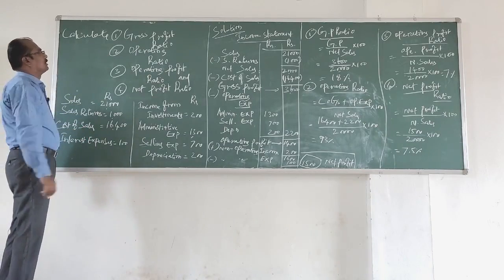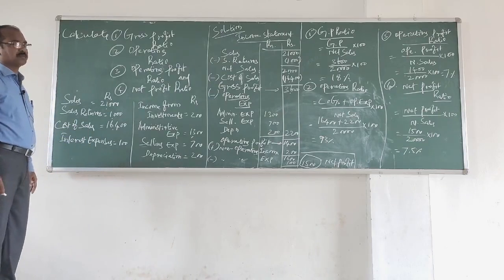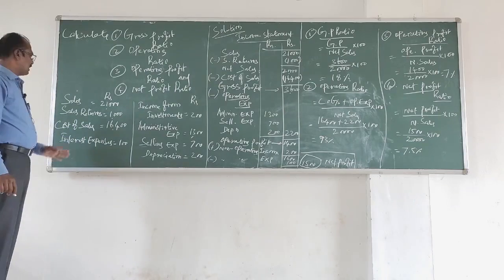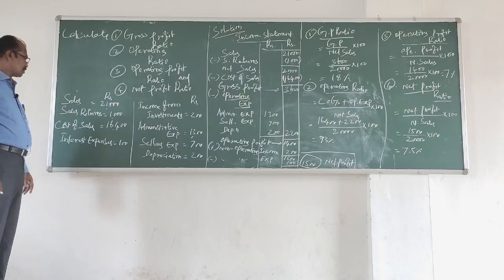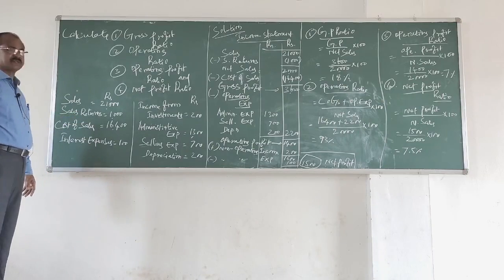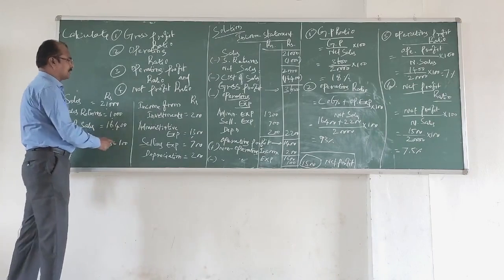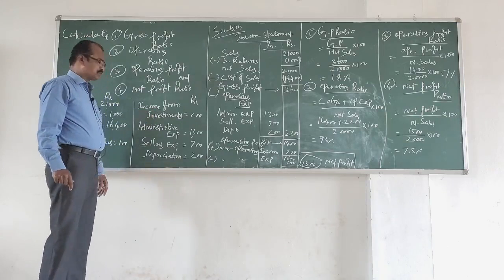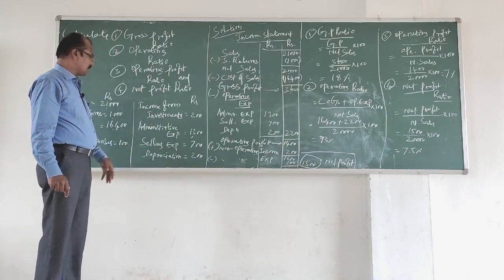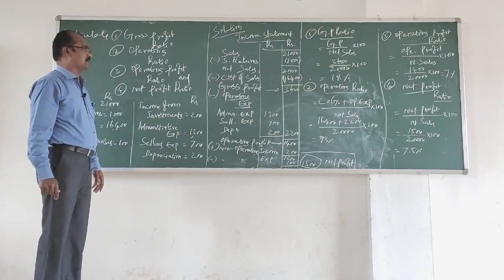Let us get into the problem: calculate gross profit ratio, operating ratio, operating profit ratio, and net profit ratio. The information given are: sales 21,000 rupees, sales returns 1,000 rupees, cost of sales 16,400, interest expenses 100, income from investments 200, administrative expenses 1,300, selling expenses 700, depreciation 200.